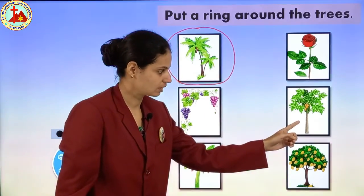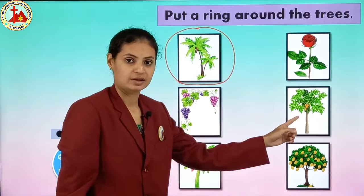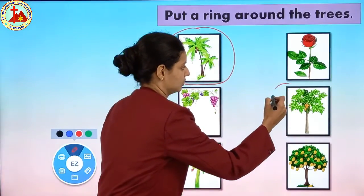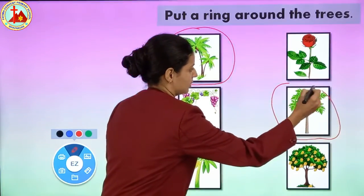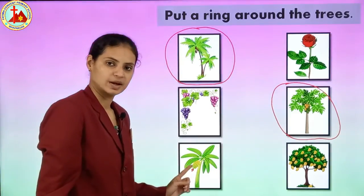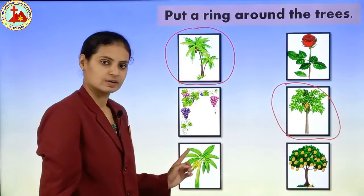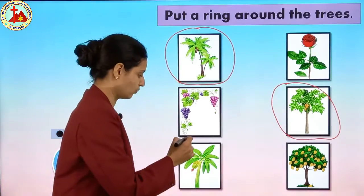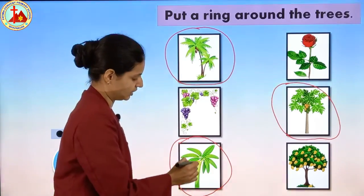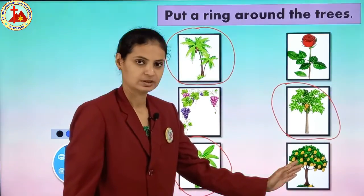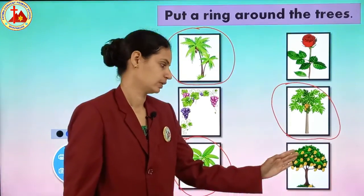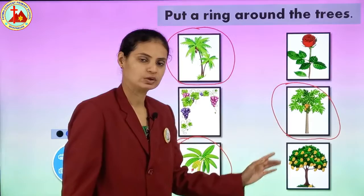The next picture is papaya — papaya tree. Yes, this is a tree, so we will put a circle. The next one is the picture of banana tree. Yes, this is a tree, so we will put a circle. Banana tree is a tree. Next one — mango tree. Yes, this is also a picture of a tree, so we have to put a circle.